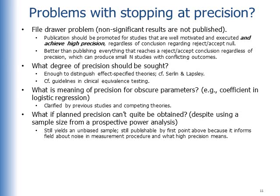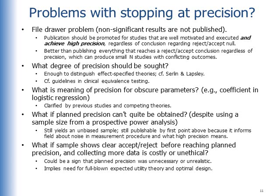And it informs the field about what high precision means in the context of this kind of research. And what if the sample shows a clear accept-reject before reaching the planned precision, and collecting more data is costly or even unethical, like in pharmaceutical studies? Well, that could be a sign that the planned precision was unnecessary or unrealistic. And if collecting data is very costly and if it's unethical in these cases, well, that implies really you need a full-blown expected utility theory and some optimal design.